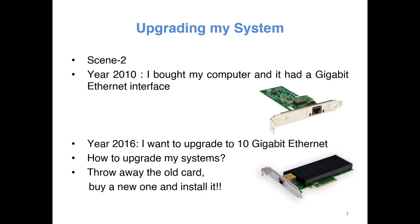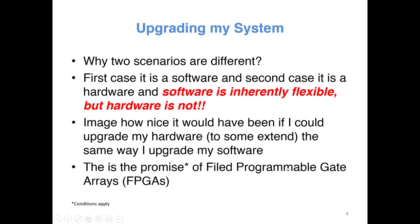Now consider a similar scenario where I have to update my hardware. For example, in 2010 my gigabit Ethernet supported only one gigabit interface, but in 2016 I want to update it to 10 gigabit Ethernet. How do I do it? I have to physically remove the Ethernet card and buy a new card and install it. So in the first case we are upgrading software and in the second case we are upgrading hardware, and it seems like software is inherently flexible and hardware is not.